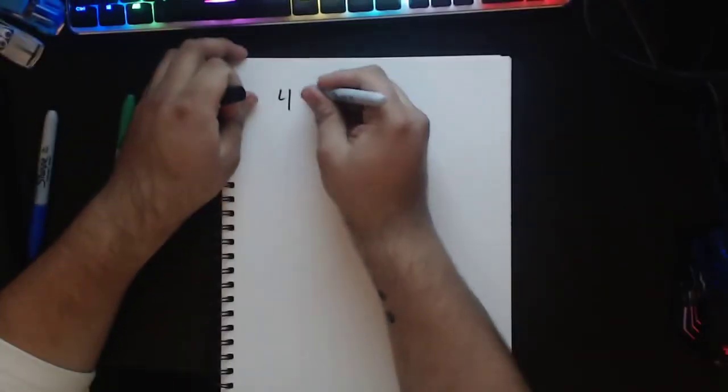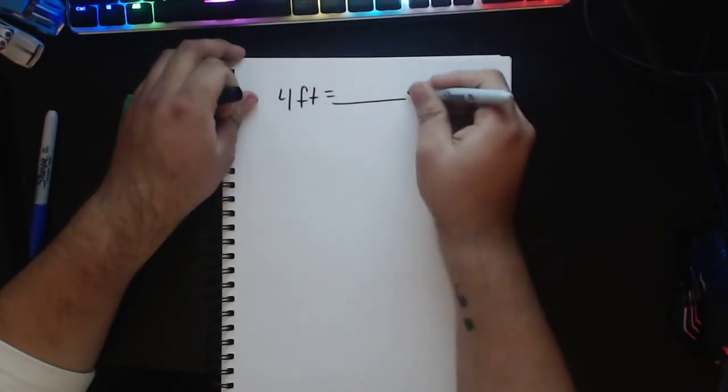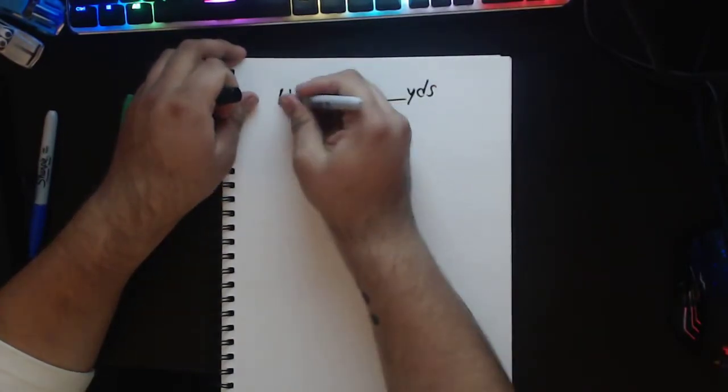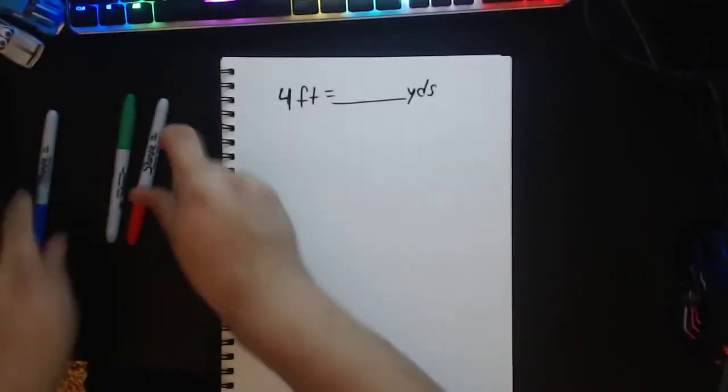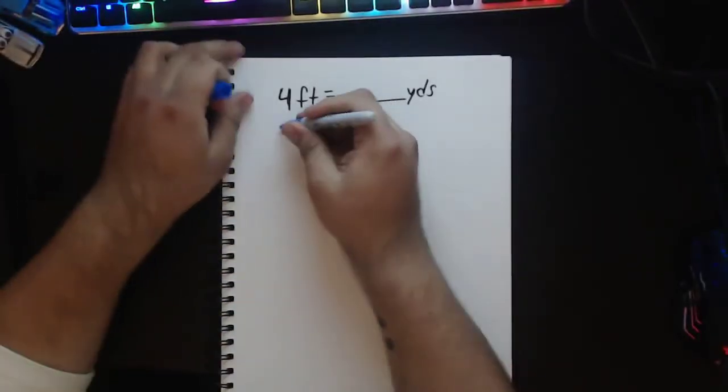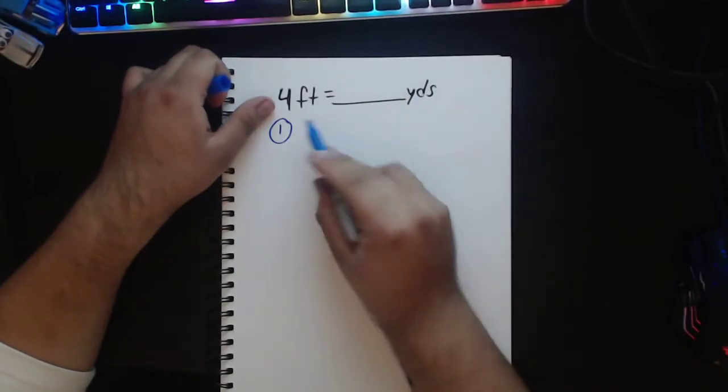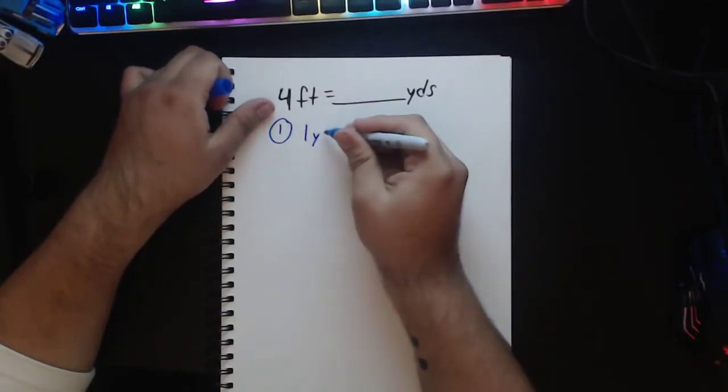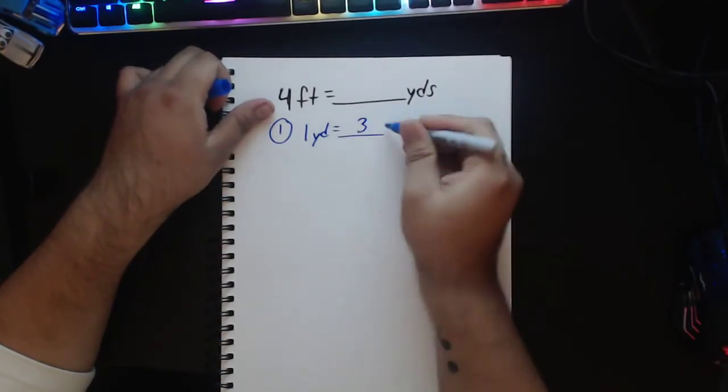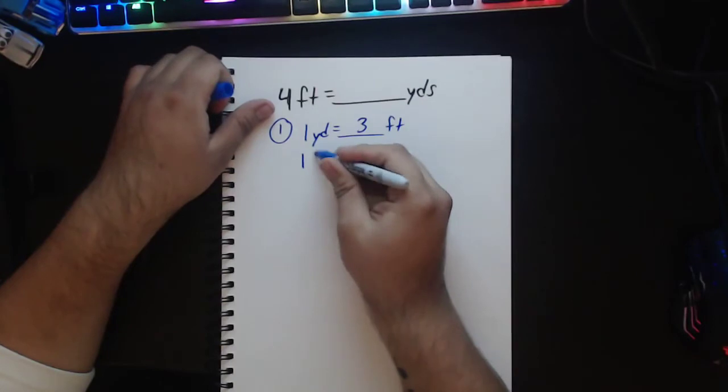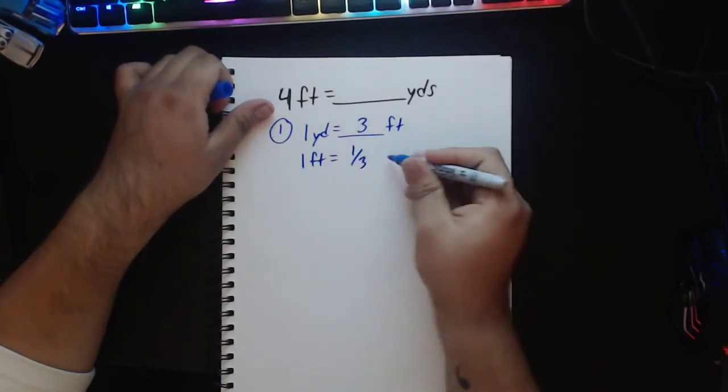Now let me see if there's any other problems that I can assist you with. Maybe this time I'm going to use the tape diagram because we are all very familiar with that model. So I'm going to do 4 feet to yards. Well let's write our key information in our first step. Well I know that in 1 yard I have 3 feet. So in 1 foot I must have 1 third of a yard.